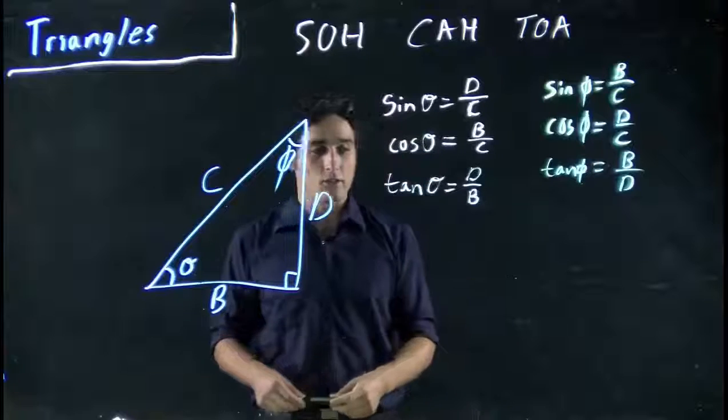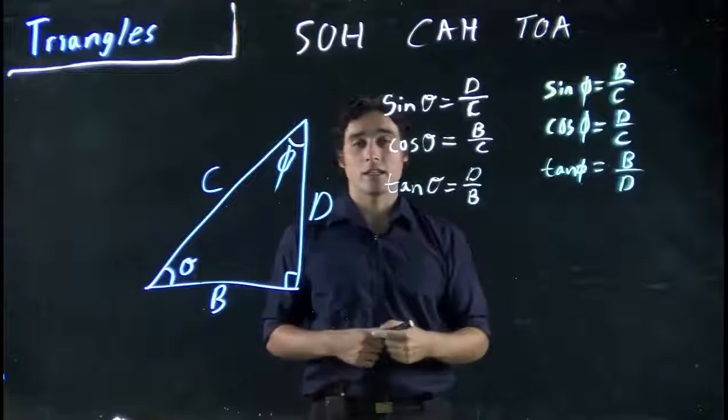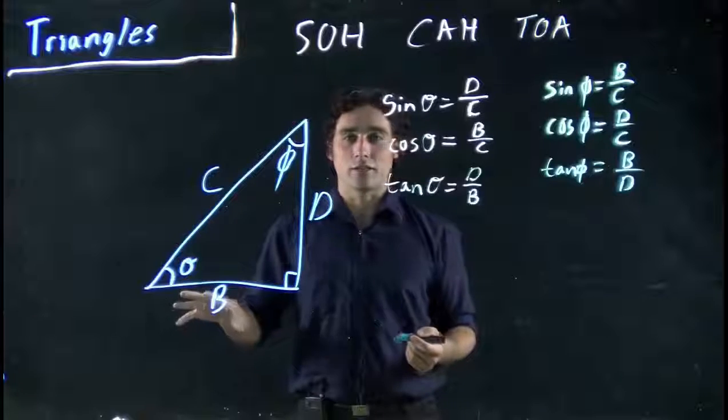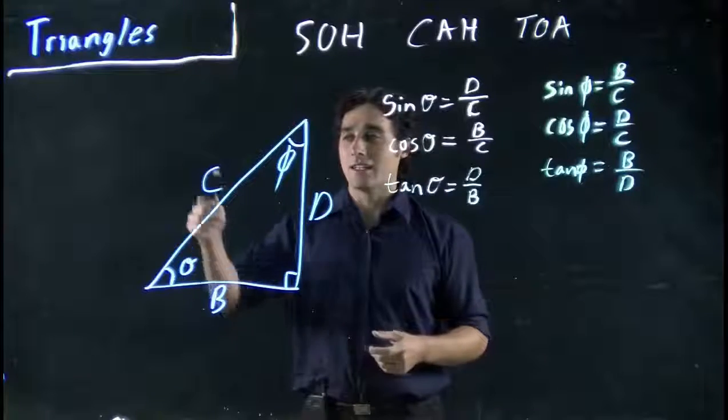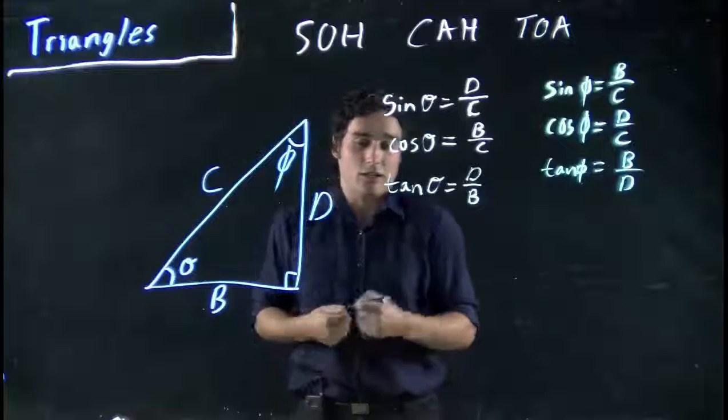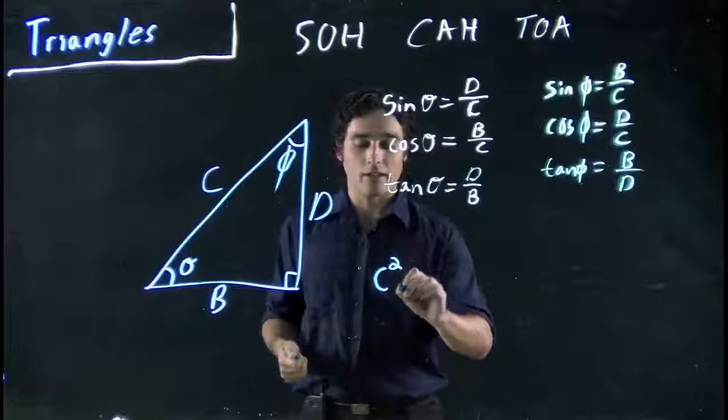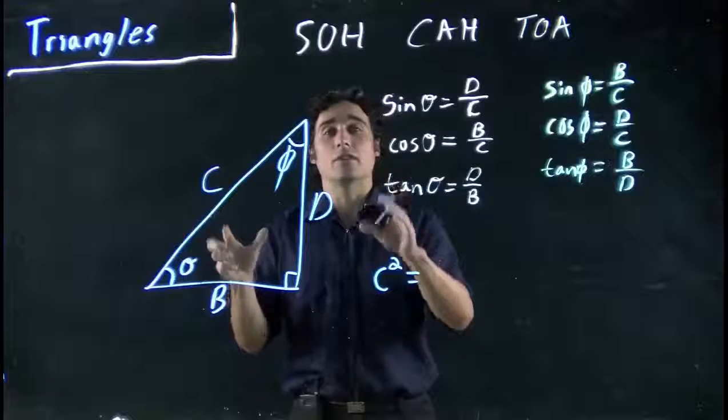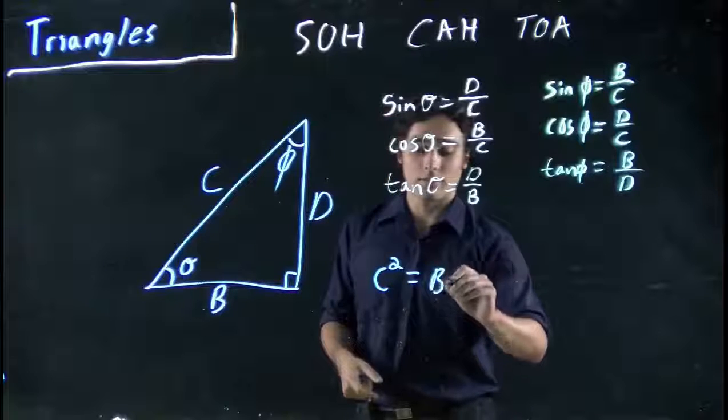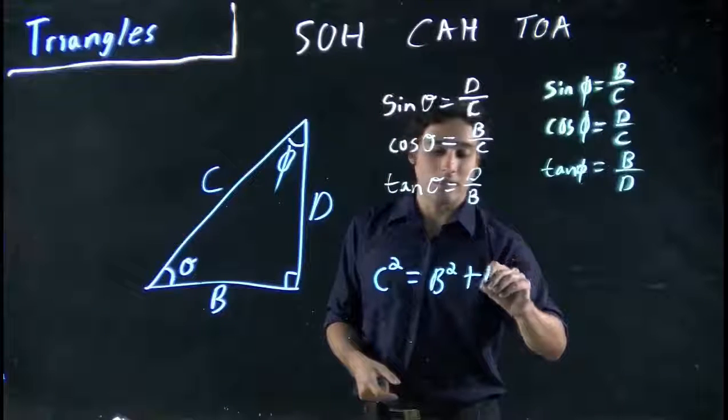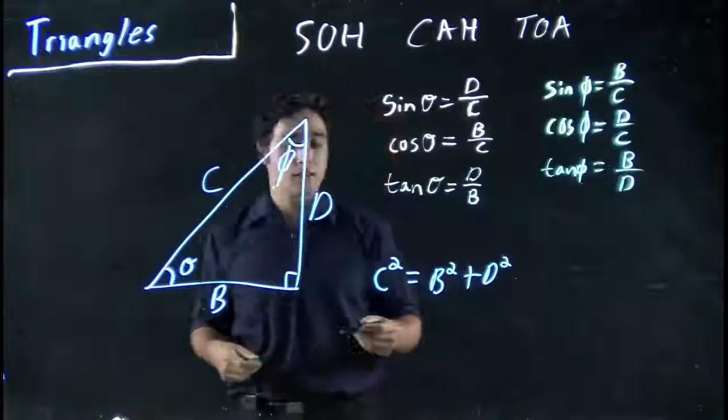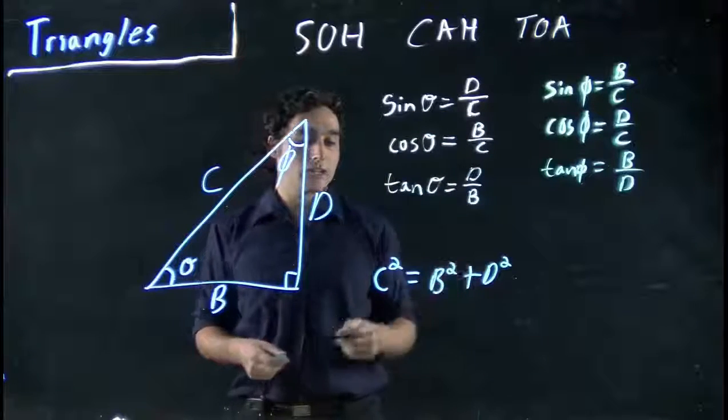The only other one we really should know is so-called Pythagorean's Theorem. What this is, is it relates the lengths to each other. Pythagorean's Theorem says the square of the hypotenuse, so square of our longest length, in our case C, C squared. That's equal to the sum of the square of the other two sides. What does that mean? Well, B squared plus D squared. The sum of the square of the other two sides. So if we have two lengths, we can solve the third.